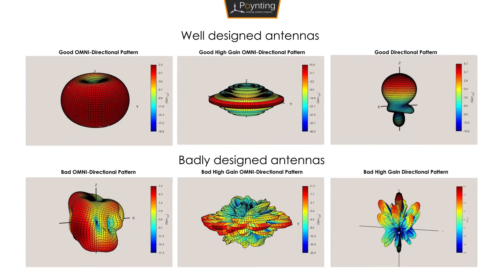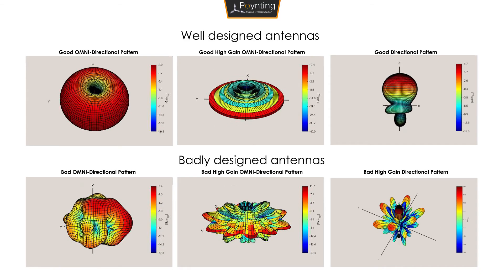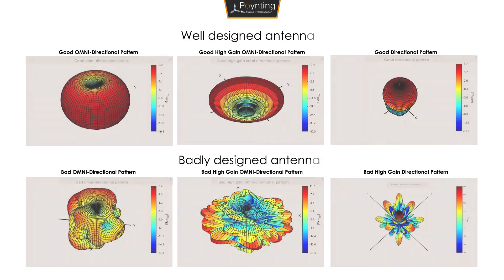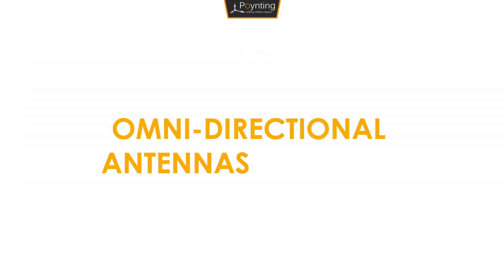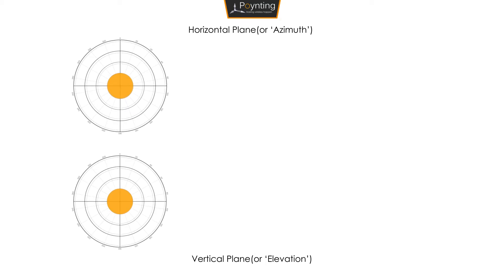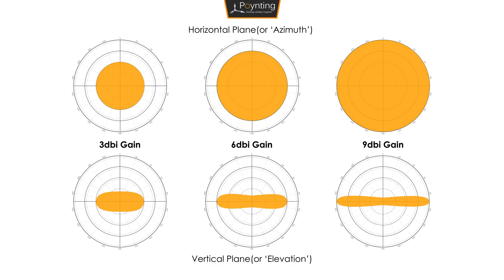Antennas are often measured and advertised by how much gain they have, but this can be misleading without considering the propagation of signal on the radiation patterns. Increasing the gain on an omnidirectional antenna increases the reach of the radiation pattern — from 0, to 3, to 6, to 9 dBi — we can extend the reach of our antenna as required.